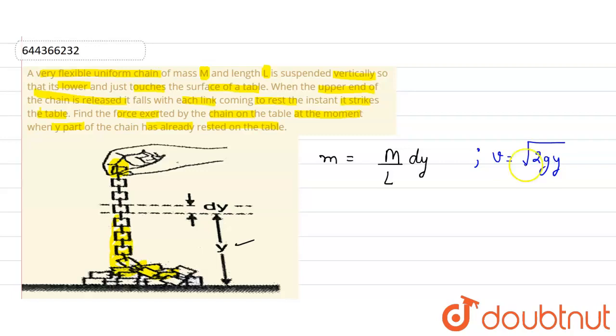Now the momentum will be dp equals mass times velocity. The mass is (m/l)dy and the velocity is √(2gy).